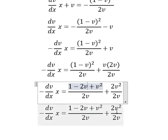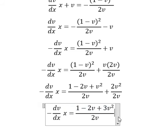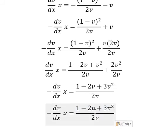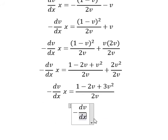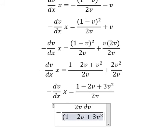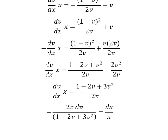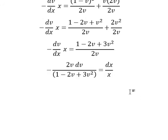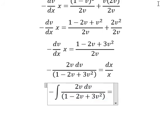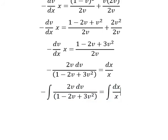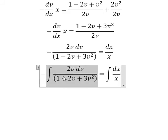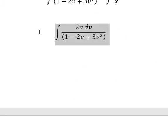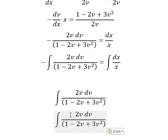So we have v squared plus 2v squared which equals 3v squared. Next I will move this term to the left and dx over x goes to the right. Now we need to apply integration to both sides. I will concentrate on this integral only — we have the number 3 here and we can do factorization.